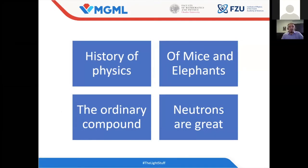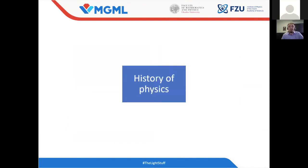I will start with some historical overview, then there will be a small intermezzo of mice and elephants, and then I will focus on the main part of the talk, which will also have physics inside. This will be a story about an ordinary compound, and at the end I will conclude with a very simple message. So now you know how the whole talk will end. Let's start with the history of physics.